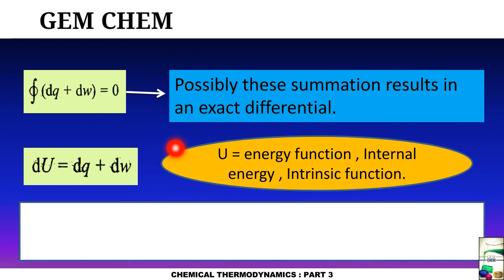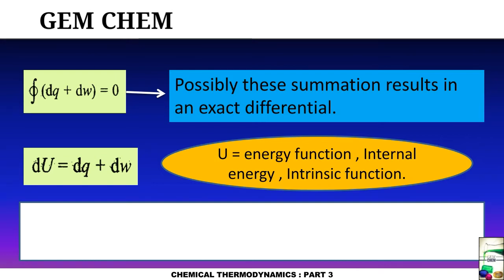Since the sum dq + dw results in an exact differential, we write it as dU, where U is known as the energy function, internal energy, or intrinsic function. More precisely, dU = đq + đw, where dU is an exact differential, whereas đq and đw are both inexact differentials — indicated by the bar notation.